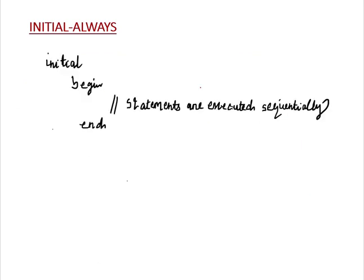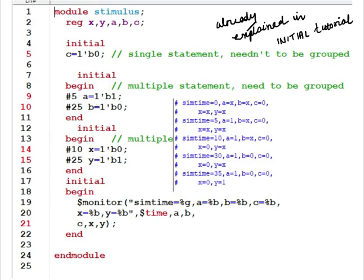Whatever we write inside an Initial Block, all these statements are executed sequentially — that means one by one. If there is a first line, second line, and third line, then first this one will be executed, then this one, then this one. Sequentially, all statements are executed inside an Initial Block.